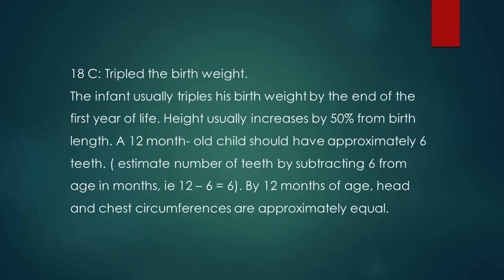Answer: 18C. Tripled the birth weight. The infant usually triples his birth weight by the end of the first year of life. Height usually increases by 50% from birth length. A 12-month-old child should have approximately 6 teeth — estimate the number of teeth by subtracting 6 from age in months (12 minus 6 equals 6).